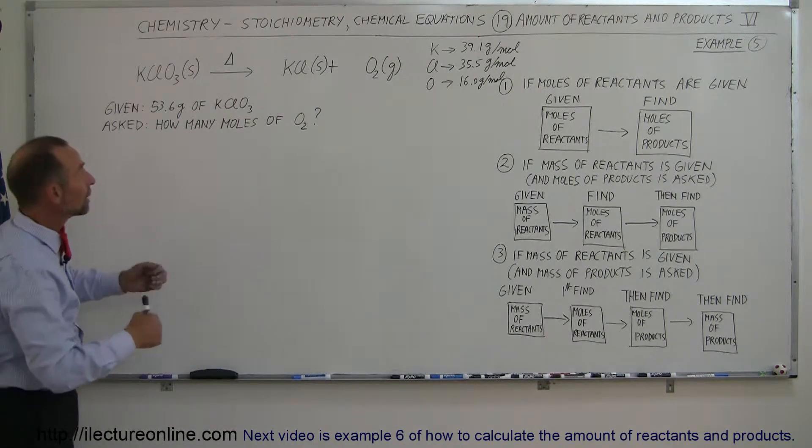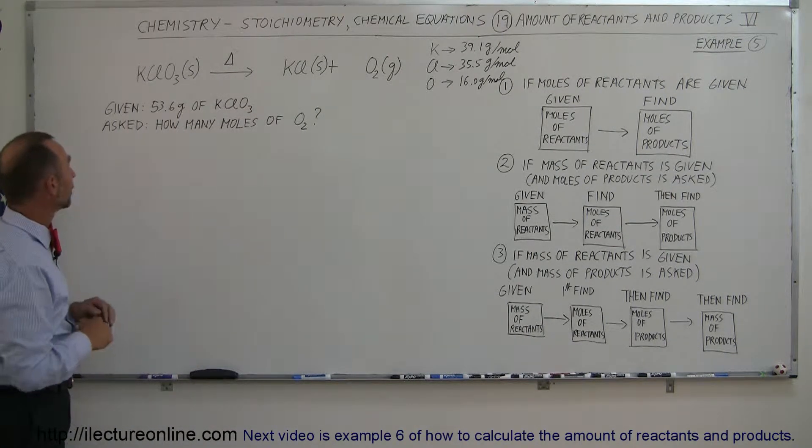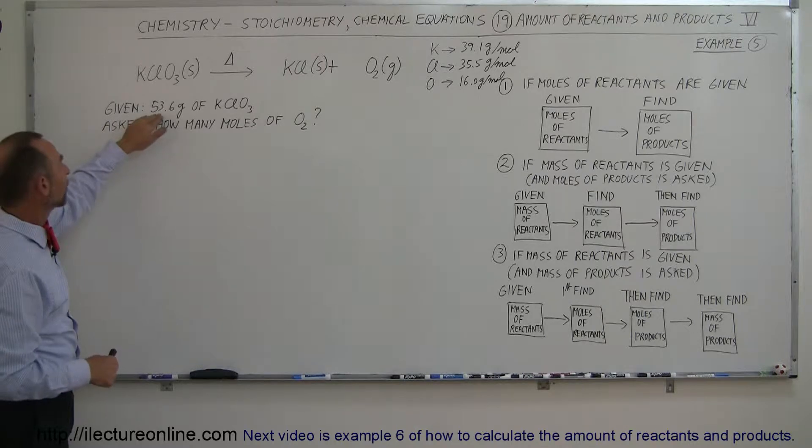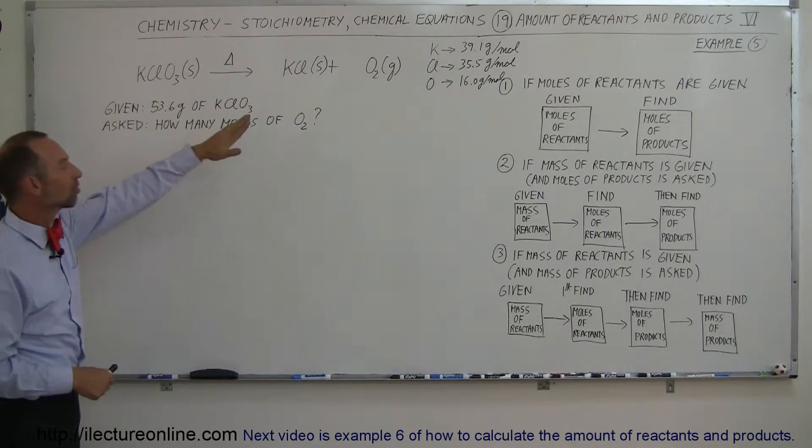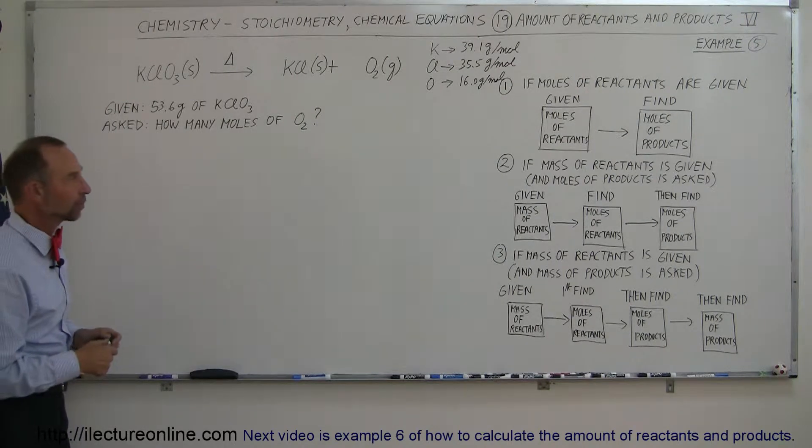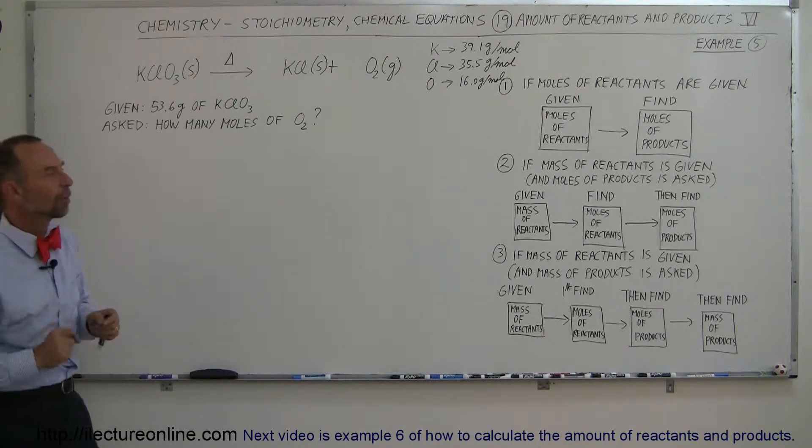Of course, this will not happen on its own. You need to heat things up a little. If we're given that we have 53.6 grams of the potassium chlorate, how many moles of oxygen gas will be produced in this reaction?